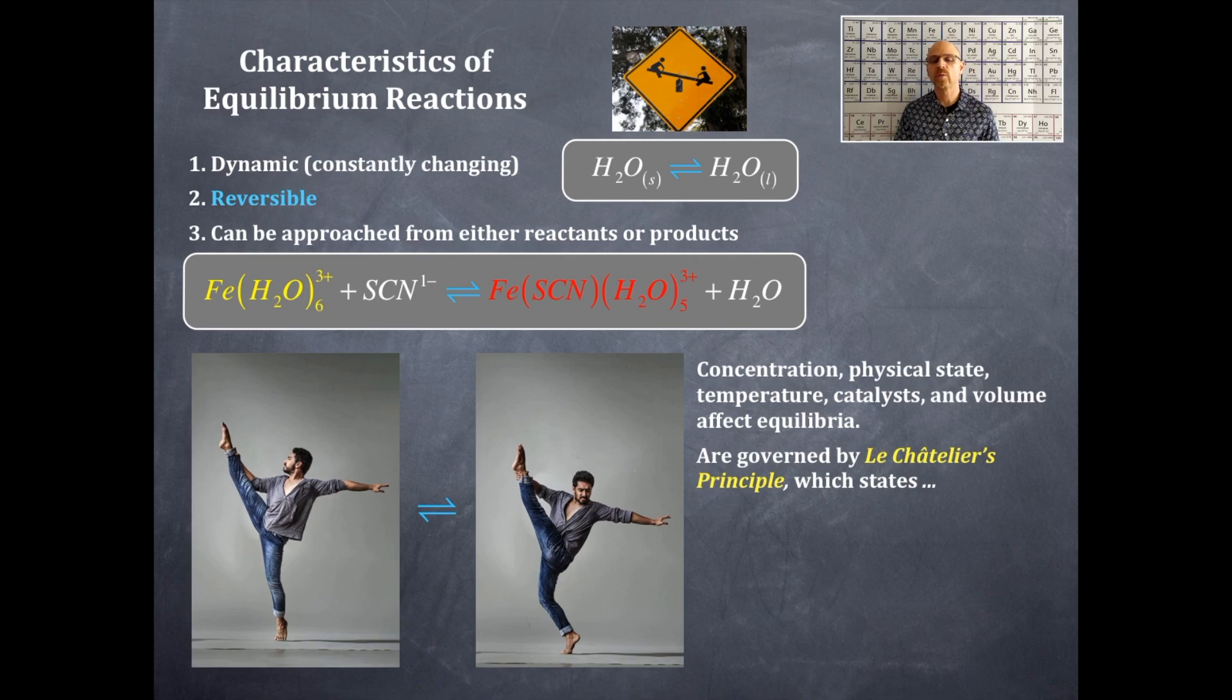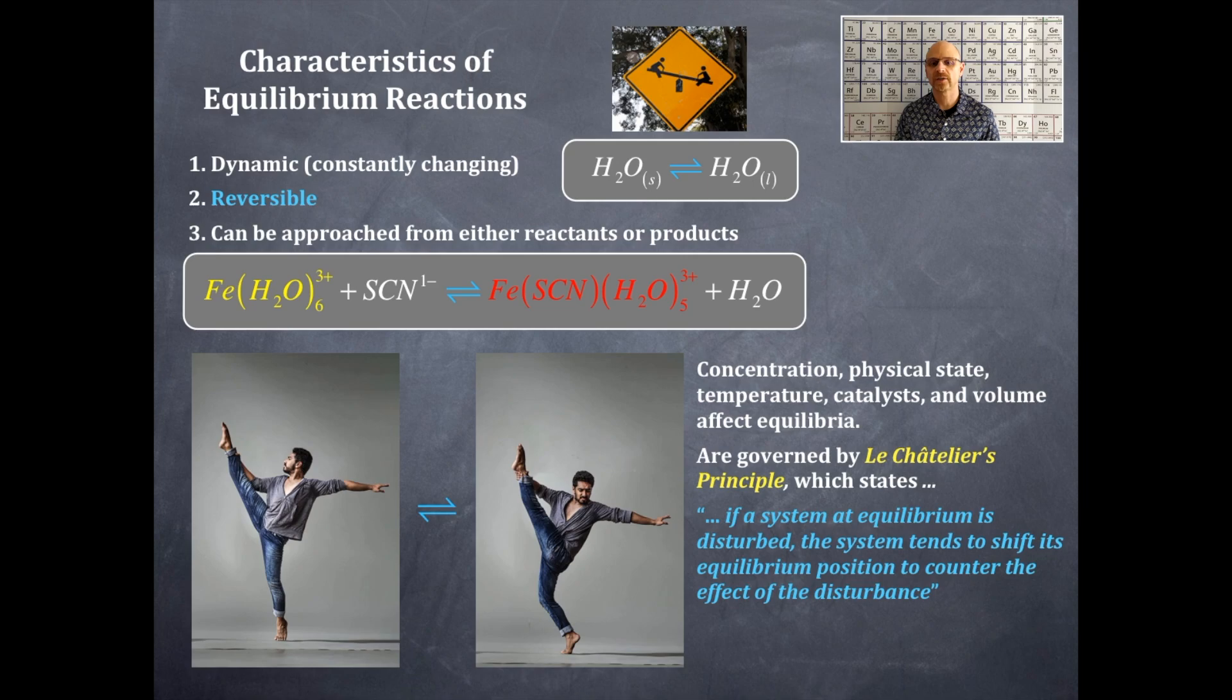And these are all governed by what we call as Le Chatelier's principle, which states the following. If a system at equilibrium is disturbed, the system tends to shift its equilibrium position to counter the effect of the disturbance. So simplistically, what that means is that the equilibrium shift will occur until Q is equal to K. So Q is called the reaction quotient. K is the equilibrium constant. So keep this in mind as we move forward in this unit and you'll understand what Q and K are and what their interrelationship is. Q could be at equilibrium, but it's not necessarily so. K is at equilibrium. Q is the reaction quotient and K is the equilibrium constant.